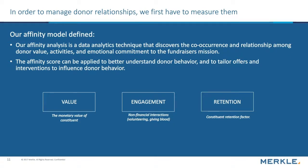With the Affinity score, we have identified three subcomponents: value, engagement, and retention. Value refers to the monetary value of a constituent — any kind of transaction, such as giving to a direct mail piece or fundraising for an event. The second component, engagement, is any non-transactional behavior — for example, volunteering for an event, attending an event, or even smaller behaviors like signing up for an email. The third component is retention: how long a constituent has been with your organization and how frequently they're retaining through behaviors and giving.